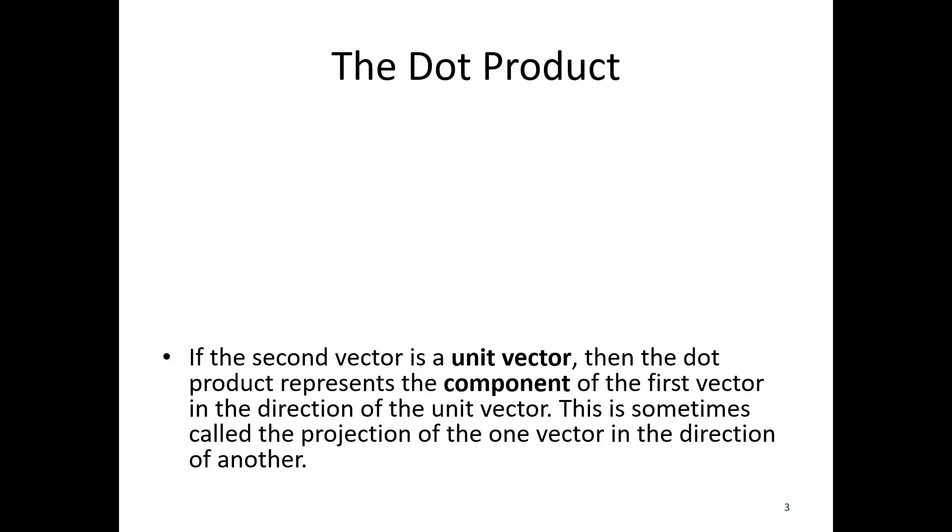And this kind of represents, just like before, we were decomposing a vector into x, y, and z components. This will let us decompose a vector into any components. If we have unit vectors in the directions we want, we can use the dot product to find the component of the vector, the first vector in that direction.